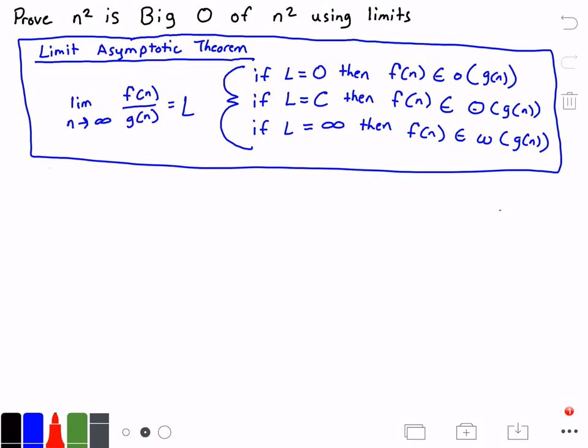You may initially say this theorem doesn't show anything about Big O, but indeed it does. If we have theta, we have Big O and Big omega.